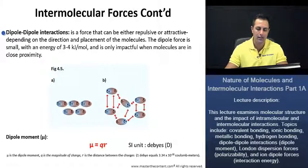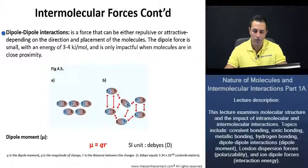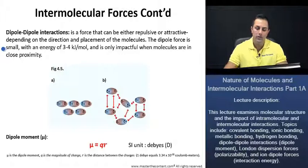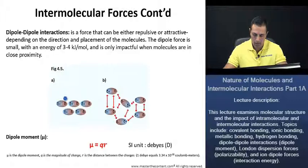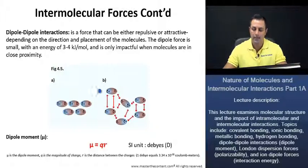Let's now take a look at dipole-dipole interactions. It is a force that can be either repulsive or attractive depending on the direction and placement of the molecules. The dipole force is small, with an energy of 3 to 4 kilojoules per mole, and is only impactful when molecules are in close proximity. In Figure 4.5a, polar molecules pack very nicely when non-like charges are in close proximity. However, when like charges are in close proximity, they repel one another. The net force of these molecules is just the sum of the attractive and repulsive forces.